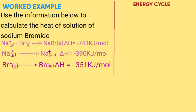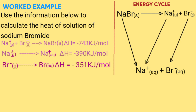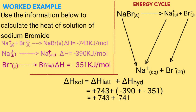We reverse the equation for the enthalpy of lattice: NaBr (solid) → Na⁺ (gas) + Br⁻ (gas). So the enthalpy of lattice becomes positive 743 kilojoules per mole. Then we draw the enthalpy of solution: NaBr (solid) → Na⁺ (aqueous) + Br⁻ (aqueous). Then the hydration steps: Na⁺ (gas) → Na⁺ (aqueous), and Br⁻ (gas) → Br⁻ (aqueous). Heat of solution = ΔH lattice + ΔH hydration = +743 + (−390) + (−351) = +743 + (−741) = +2 kilojoules per mole.